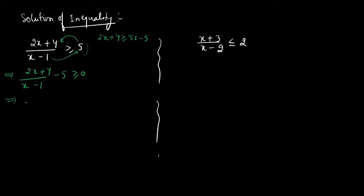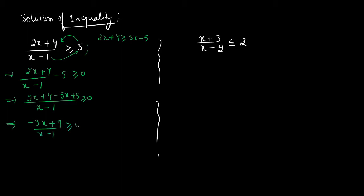Now I will take LCM. This gives us (2x + 4 − 5(x − 1)) / (x − 1) ≥ 0, which simplifies to (−3x + 9) / (x − 1) ≥ 0. Now, in the last video, we studied the wavy curve method, and that method is going to work at this stage. This is exactly why the wavy curve method is important — so that we can solve this type of inequality.